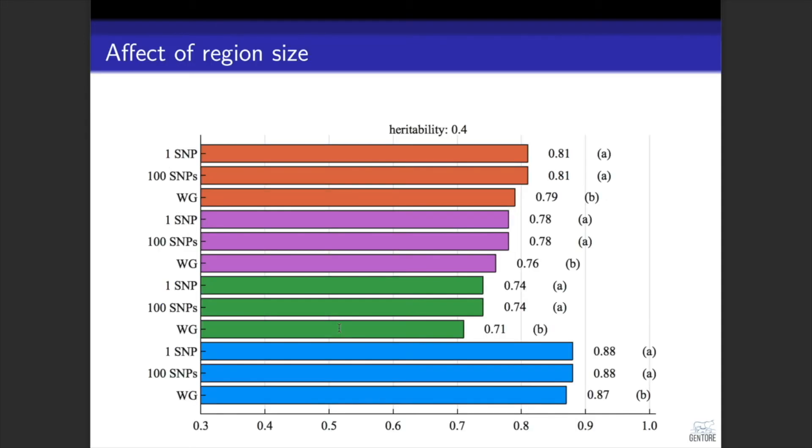First thing we should look at is the effect of region size. Each color is for a breed and also for the admix population. And one thing we can see from here is that the whole genome resulted in the lowest accuracy, but there was no difference between one SNP and 100 SNPs. So from now on I will continue with the results from one SNP region size.